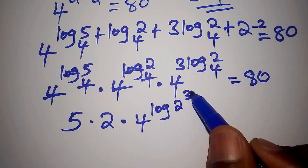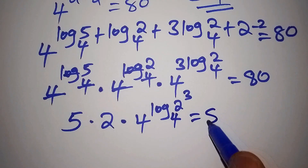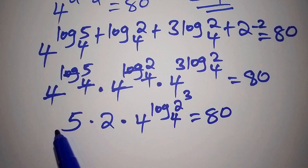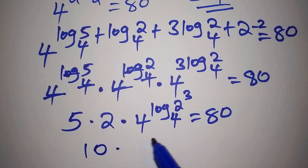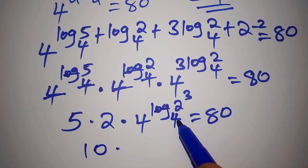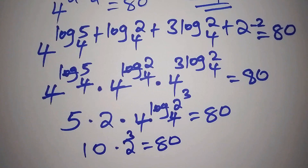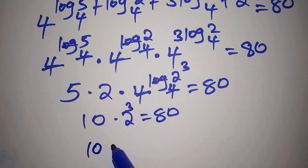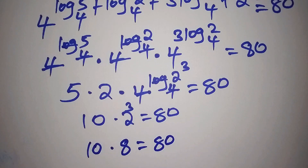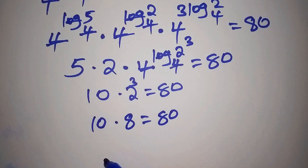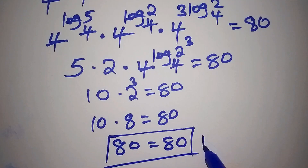So 4 to the log of 2 to the base of 4, then log base 4 cancels with the 4, giving 2 to the power of 3, equals 80. So 5 multiplied by 2 is 10, then 10 multiplied by 2 to the power of 3, which is 8, equals 80. So 10 times 8 equals 80, confirming our answer is correct.